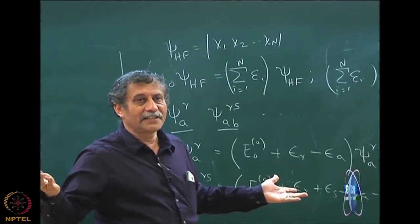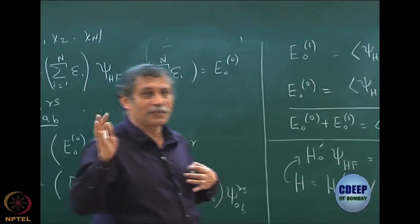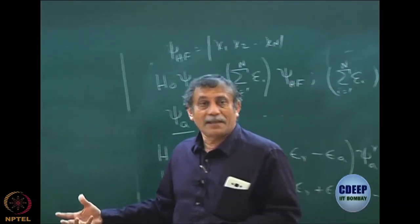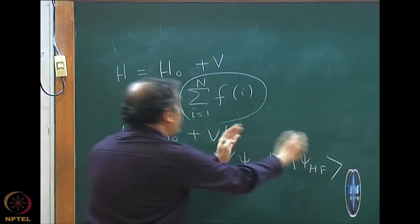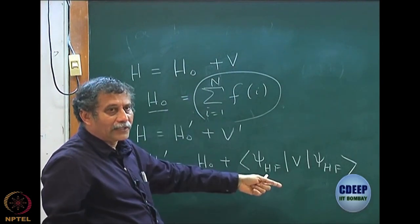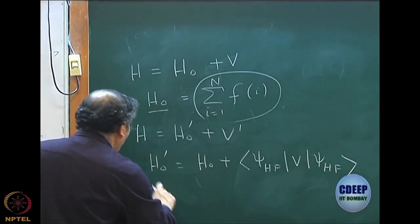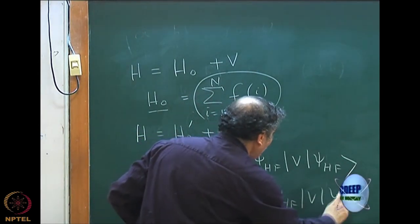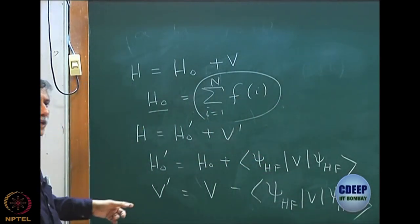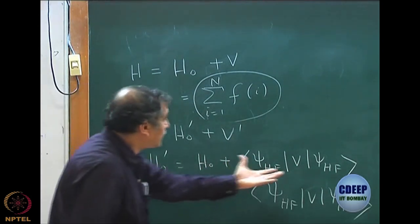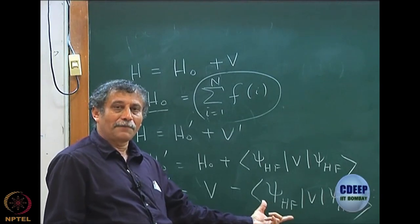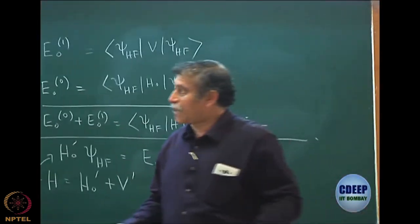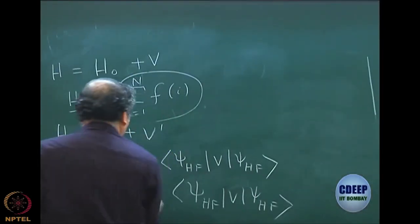All eigensolutions of the new H₀' are also just scaled by this number, so they all remain eigenstates. I am reconstructing H₀' by simply adding to old H₀ the quantity ⟨Ψ_HF|V|Ψ_HF⟩, which I can calculate. Of course V' also changes: V' = old V minus ⟨Ψ_HF|V|Ψ_HF⟩. My total Hamiltonian H must remain the same, so if I add a number to H₀, the same number must be subtracted in V'. My perturbation operator is now V', not V.